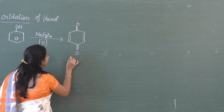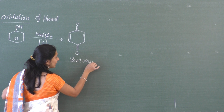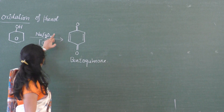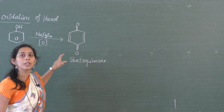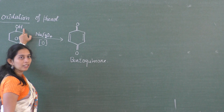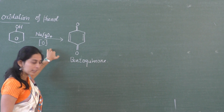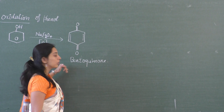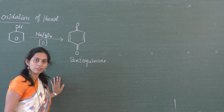This product is what we call benzoquinone. We discussed this in the last class. You have to use sodium dichromate, not sodium chromate. When a benzene ring having an alcoholic group — that is a phenol — undergoes oxidation, a diketone or benzoquinone is formed. This is the oxidation of phenol.